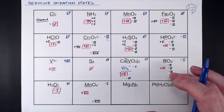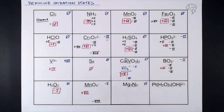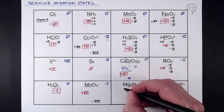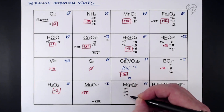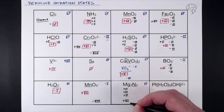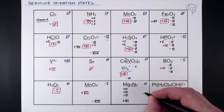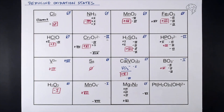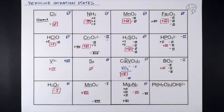Magnesium nitride Mg₃N₂ — overall oxidation state zero, finding nitrogen since it can have a variable oxidation state. We've got three magnesium atoms, each +2 (group 2), so 3 × (+2) = +6. To get from +6 to zero we need −6, but there are two nitrogen atoms, so each nitrogen is −3.